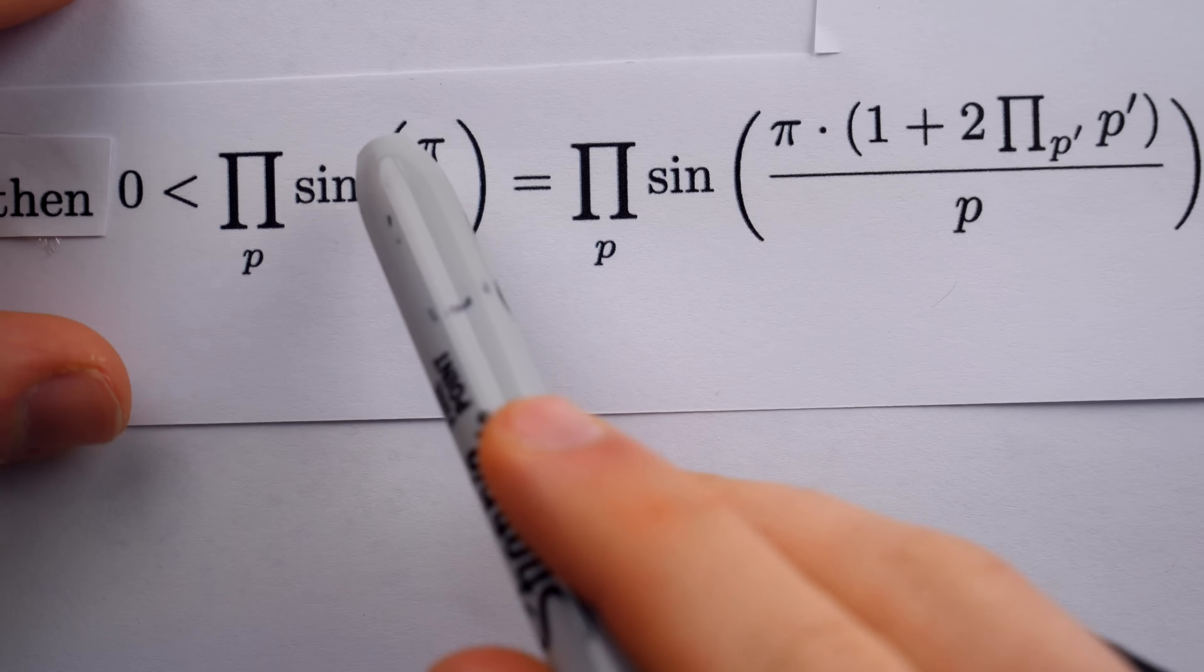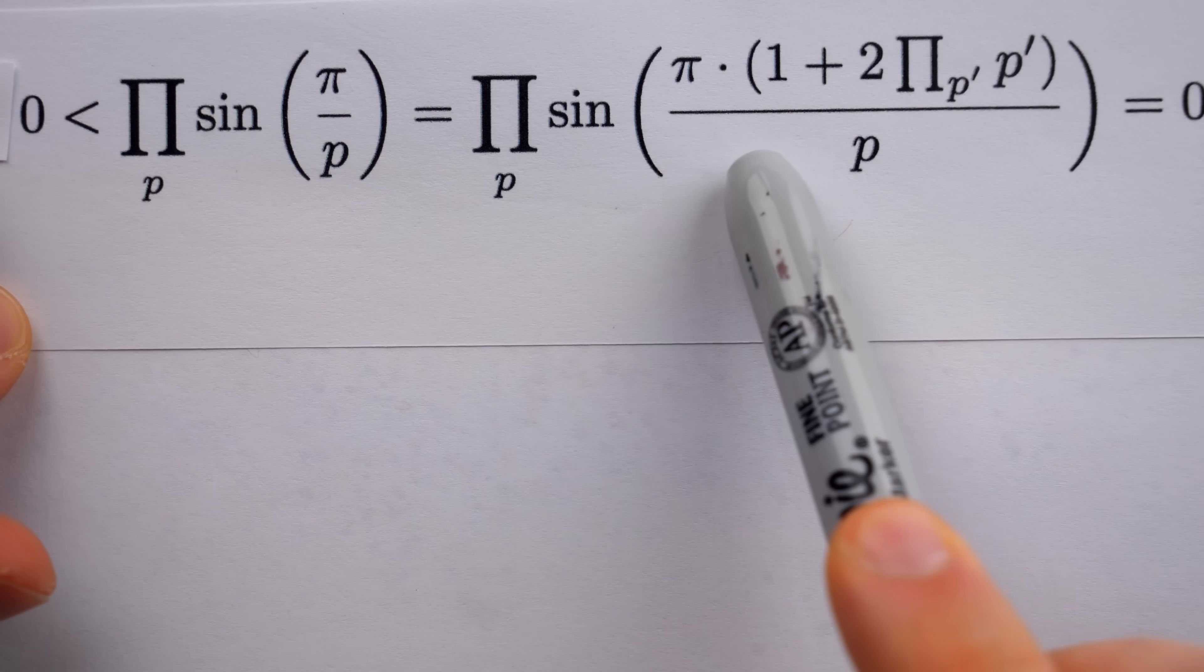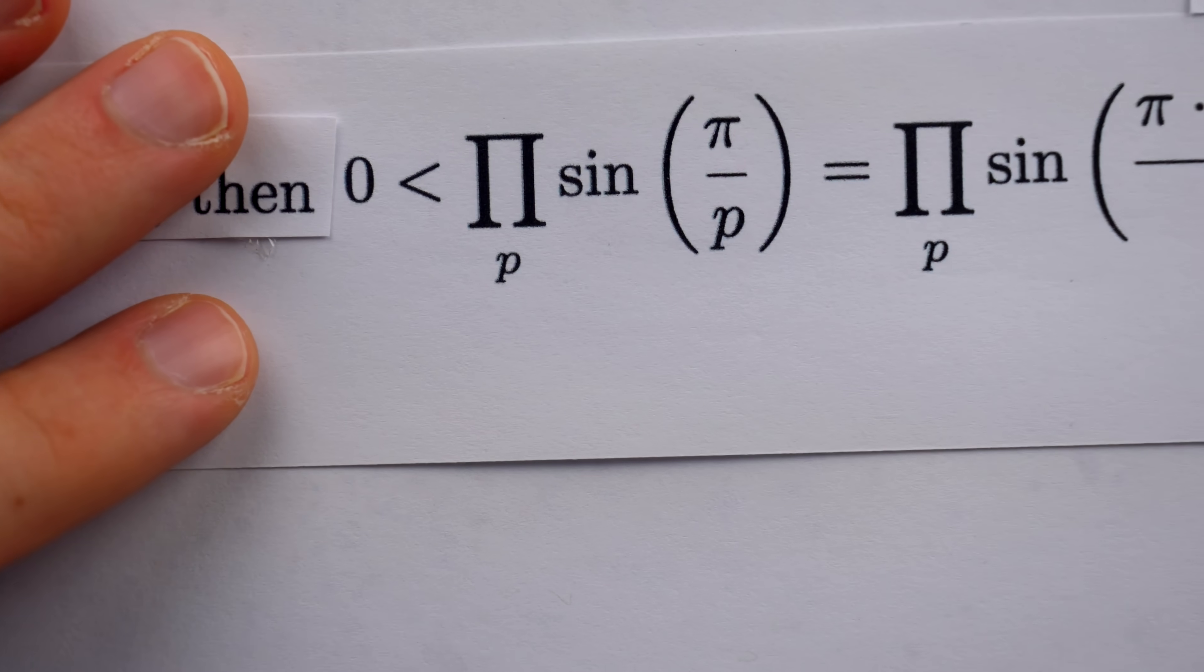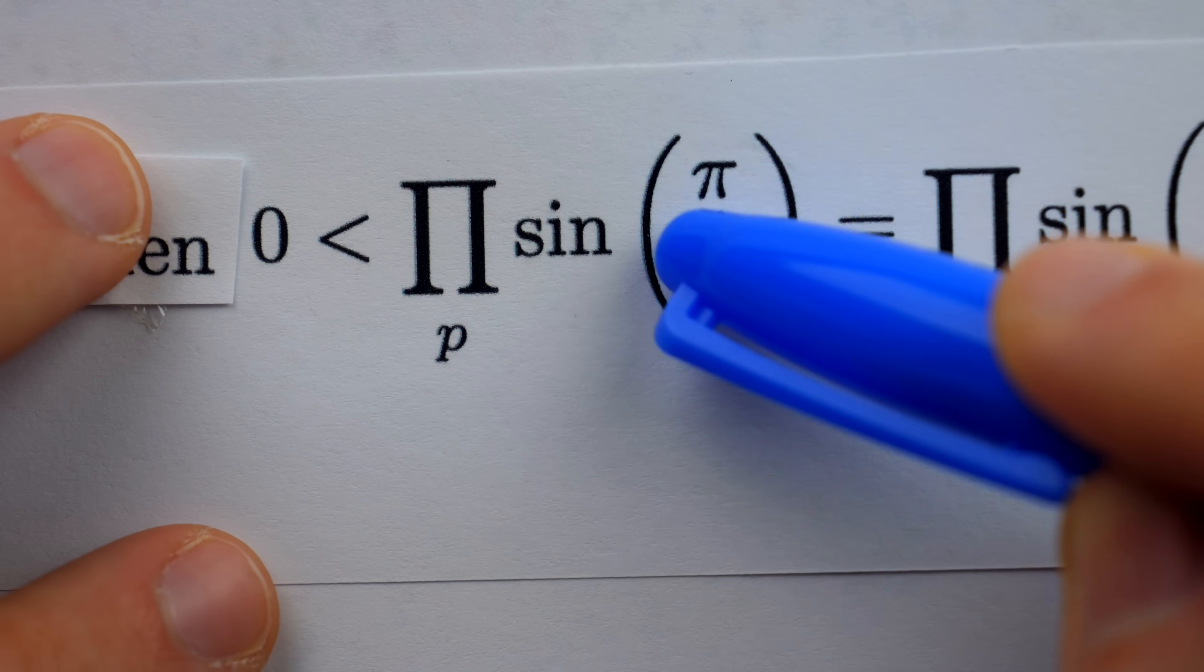Then, this product is equal to this one. And how do we know that? What's going on here? Well, remember, we can add even multiples of pi inside the sine function without changing the value.